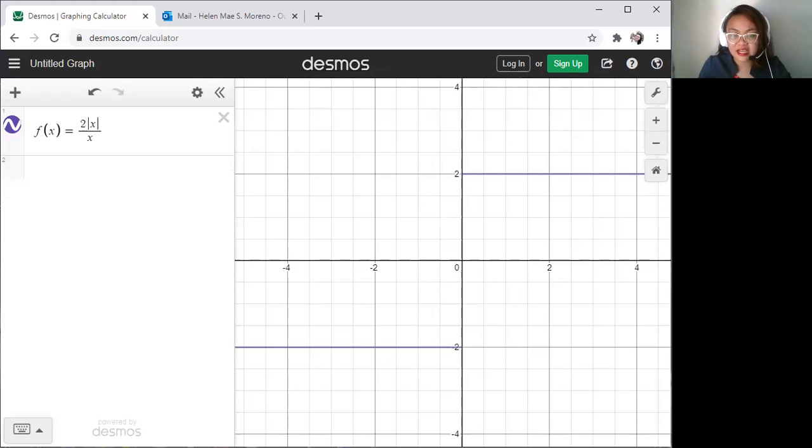Numbers from the left of 0. Remember, we are talking about 0. Numbers from the left of 0 are approaching negative 2 here. While numbers from the right of 0 are approaching positive 2. So did they meet? No. Do we have a limit? None. Because they did not meet. Therefore, the limit does not exist.